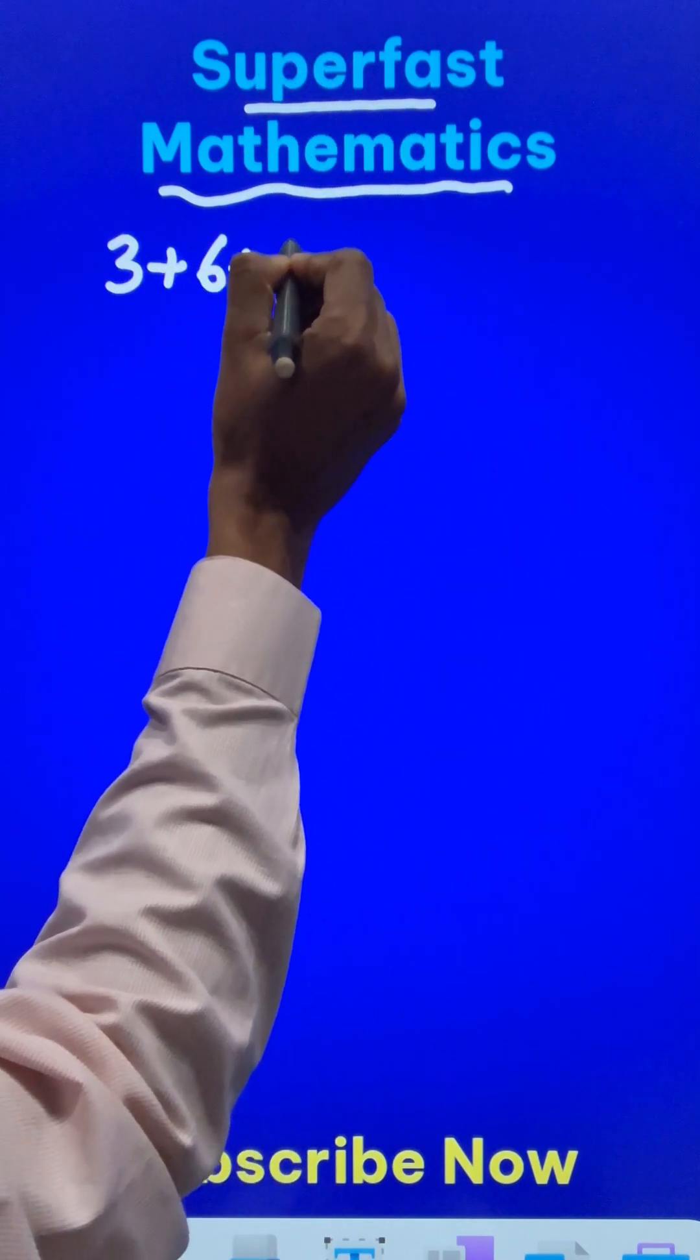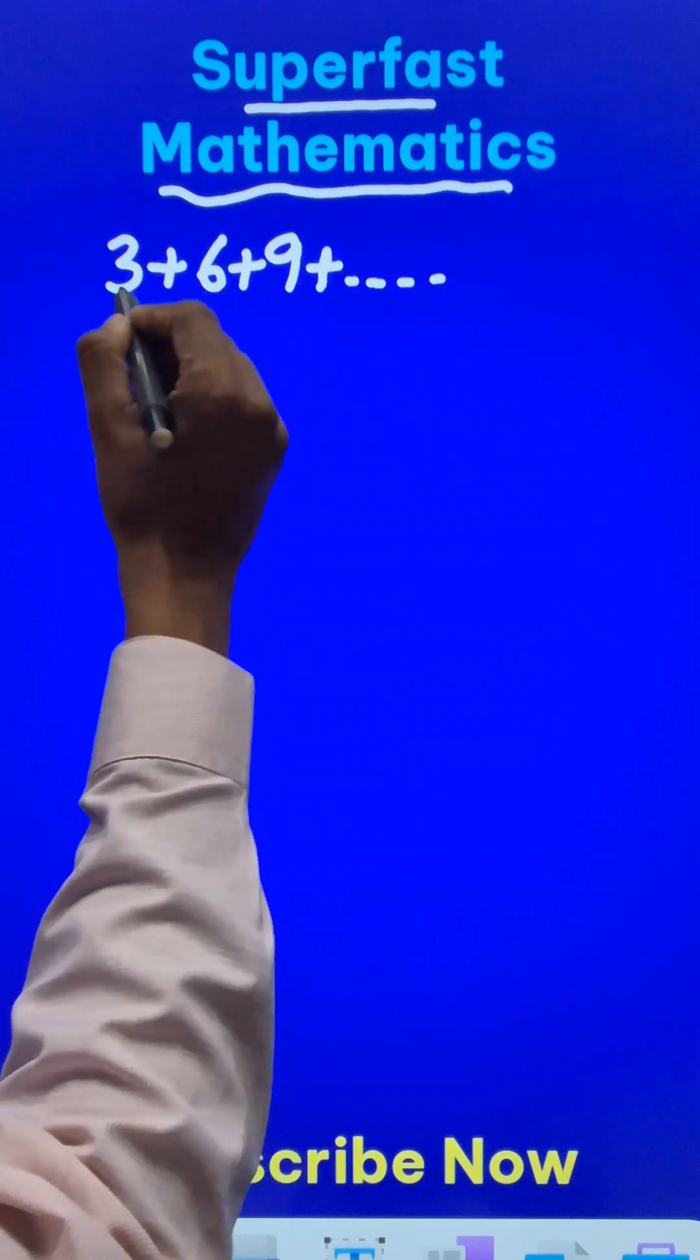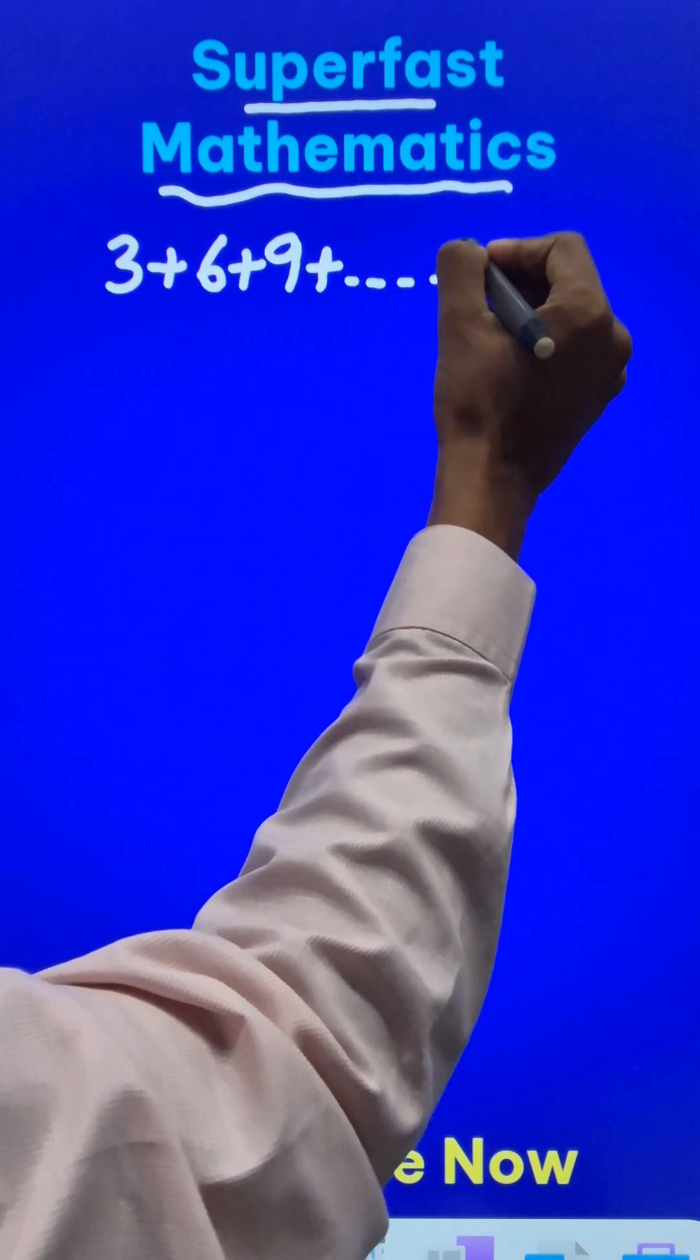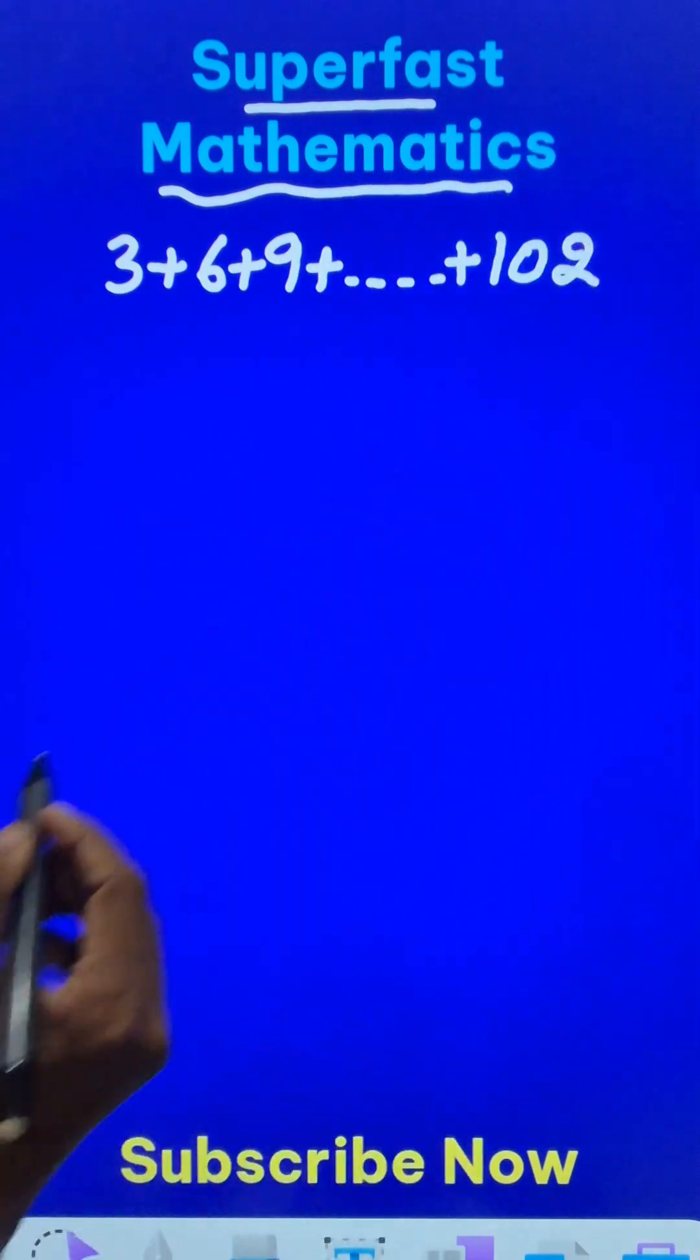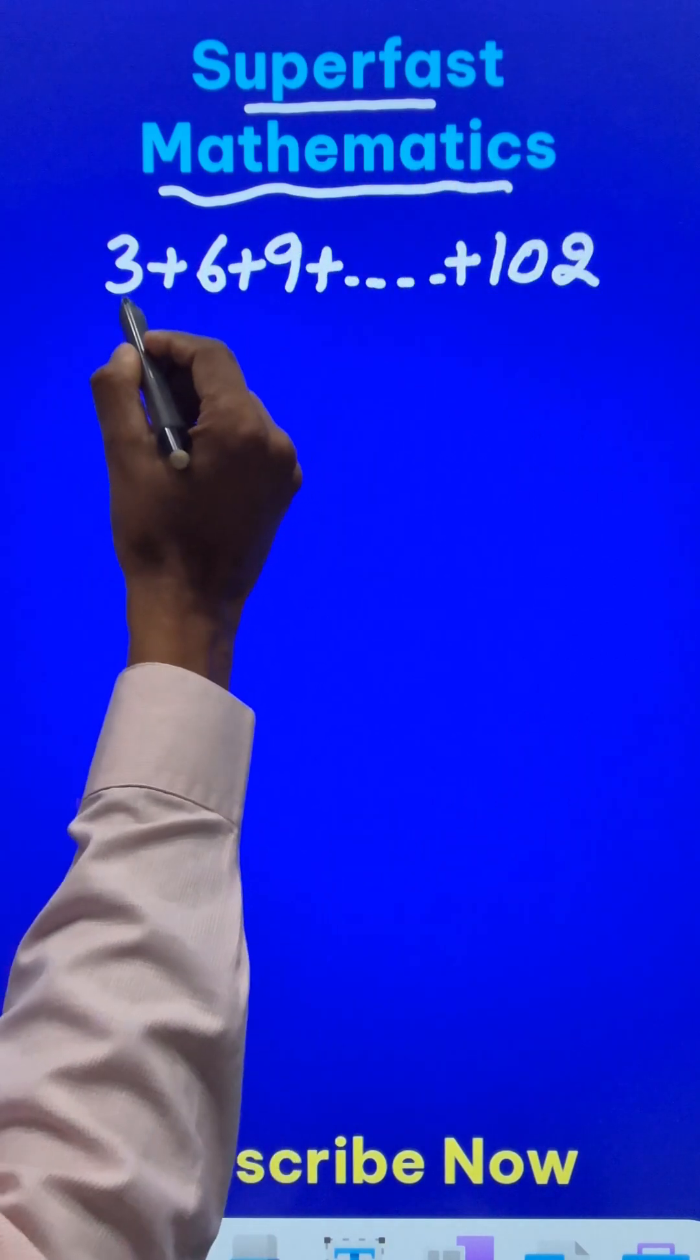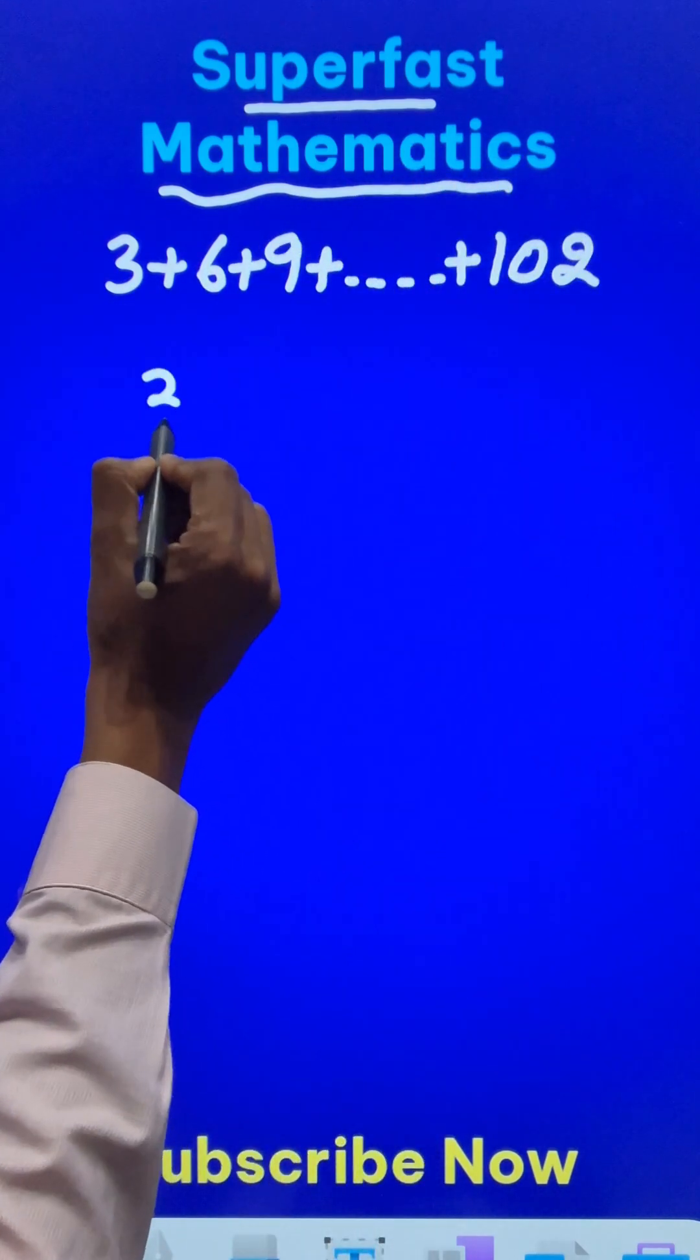Look at this. 3 plus 6 plus 9... So I want to add all multiples of 3 up to any number, say 102. Now what do you do in such cases? Because they are multiples of 3, first write 3.